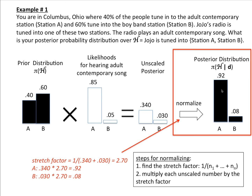What normalizing does is take the proportions of these probability weightings and puff them up so they fill out a proper probability distribution. The first step is to find the stretch factor, which is 1 over the sum of these two numbers. So 1 over (0.34 + 0.03) gives you 2.7. You multiply 0.34 by 2.7 and get 0.92. You multiply 0.03 by 2.7 and get 0.08. These two numbers now add up to 1. So the posterior is: there's a 0.92 probability JoJo is listening to adult contemporary and a 0.08 probability he's listening to the boy band station.